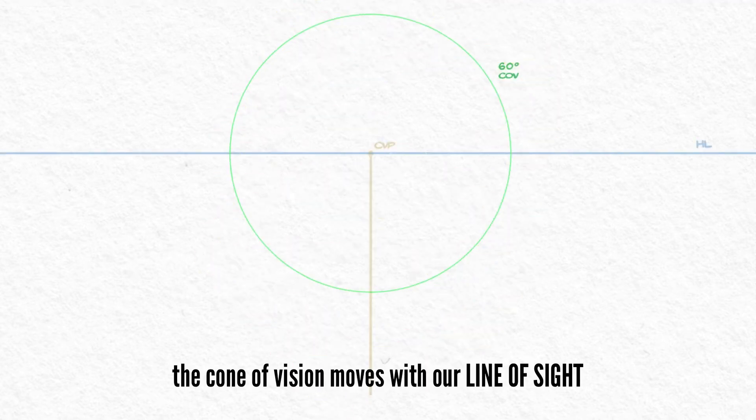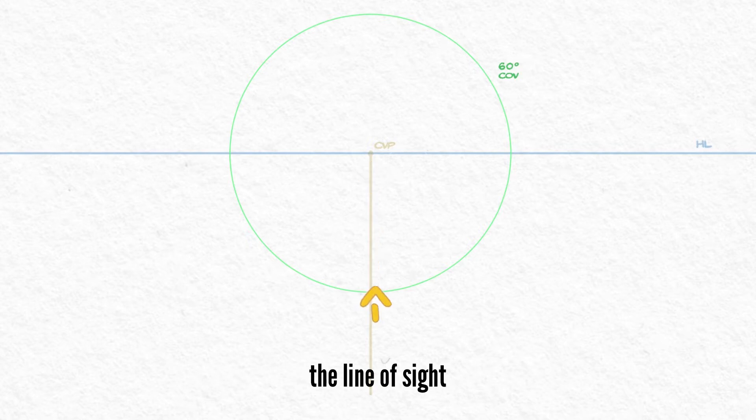The cone of vision moves with our line of sight, but for here, the line of sight and the center vanishing point are the same on the horizon, so we're in two-point perspective, not three for this example.